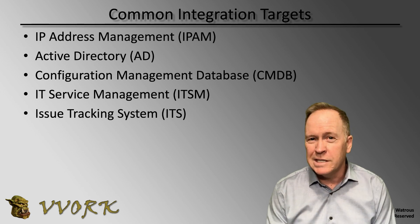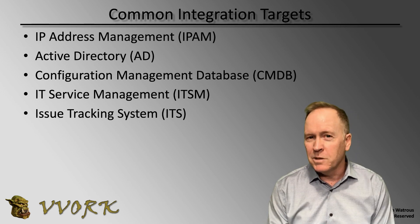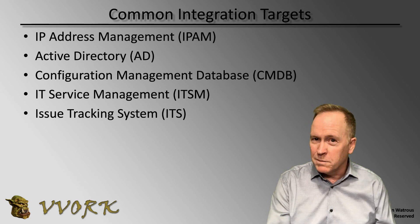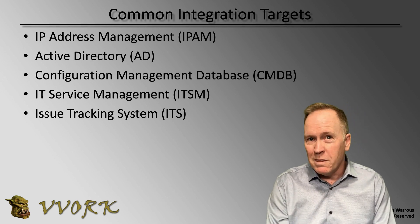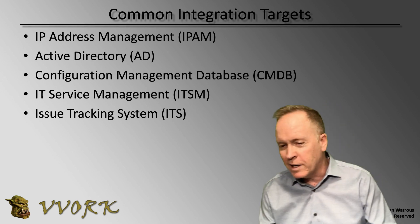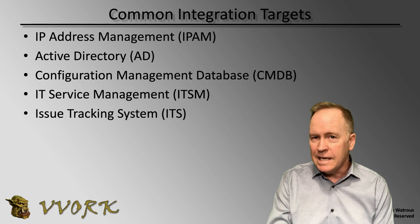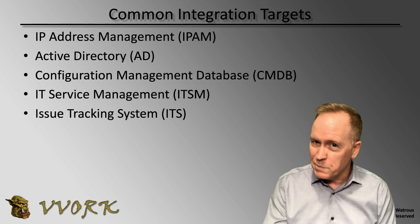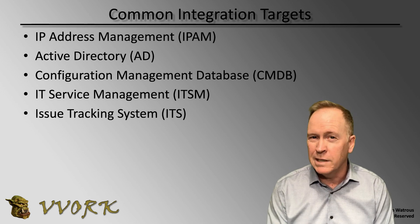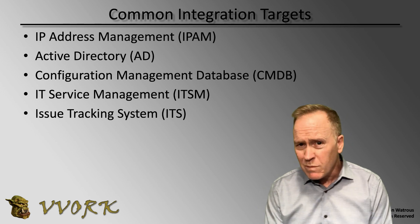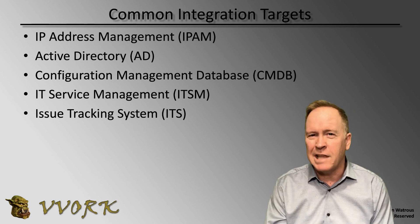For essentially all the things listed here, plus the seemingly infinite other integrations you need in your environment, customers tend to have different systems. One customer uses Infoblox for IP addressing, another uses QIP. Because there is so much variation between different customers' IT infrastructures, vRealize Automation is designed through subscriptions to be able to call out to Orchestrator workflows that can talk to any of these types of systems and more — including the specific brands and software packages you have in your environment.